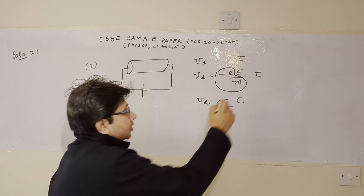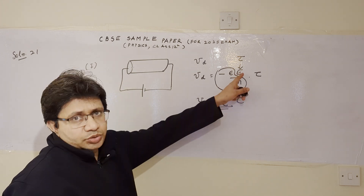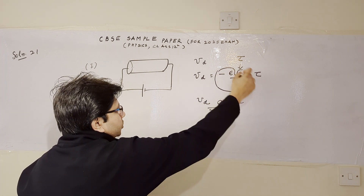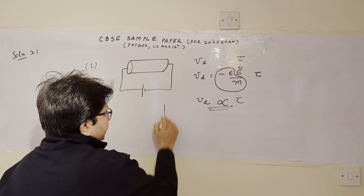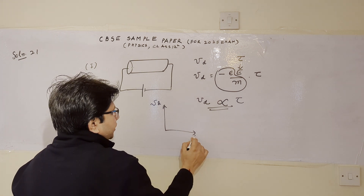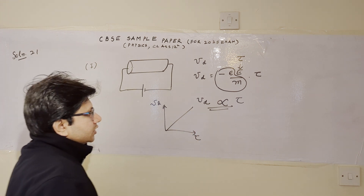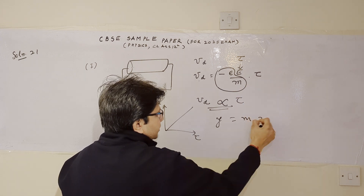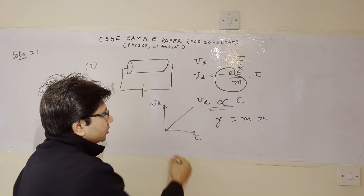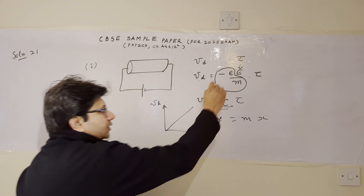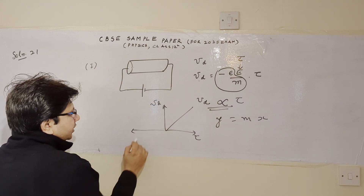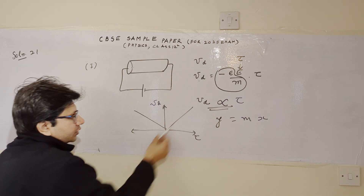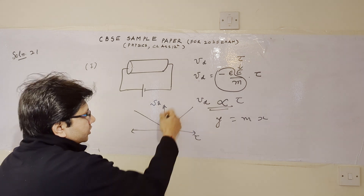But here is where we might make a mistake: the electric field E is also present. If we assume E to be constant, then the whole term acts as a constant, and by mistake we might draw the graph between Vd and tau as a straight line passing through the origin — because the expression takes the form y equals mx. Taking the negative sign into account, some students may draw the curve with a negative slope. But this is the mistake, because drift velocity does not only depend on relaxation time.